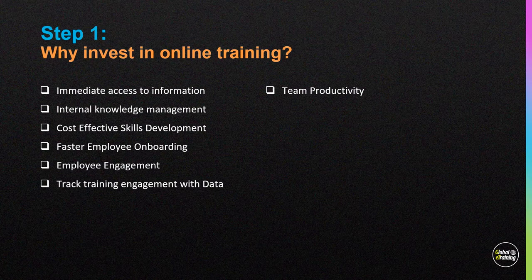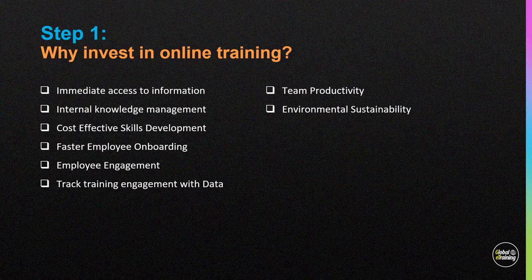This helps with team productivity — knowing that people are engaging with and learning content means everyone's at the same baseline level of knowledge. If someone is struggling at work, rather than interrupting a colleague (making two people unproductive), they can go to a searchable online resource available at their fingertips. Online training is also environmentally sustainable — flying people around the world to train them isn't. And it's highly scalable: you could train one person or 100,000 people in multiple languages all at the same time.